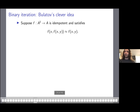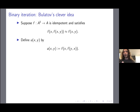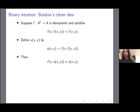Suppose we have some idempotent binary function F which satisfies F(x, F(x,y)) = F(x,y) — obtained by the iteration on the previous slide. Now we do something surprising: define a two-variable function U(x,y) = F(x, F(y,x)). It is not obvious at all that this should help us toward our goal — it seems completely unrelated to the identities we started with. But this will satisfy one of the identities we were trying to get with the partial semilattice operation.